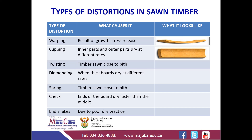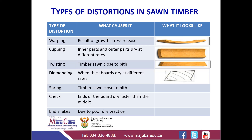Twisting: the timber sawn close to the pith, and your timber will twist like that as shown in the picture. Diamonding: when the bole dries at different rates. When you look at this timber, this is the original shape. Then after diamonding, the cross-section shape will change to this. Spring: timber sawn close to the pith and it bows like that.